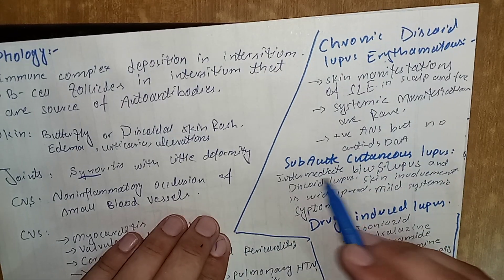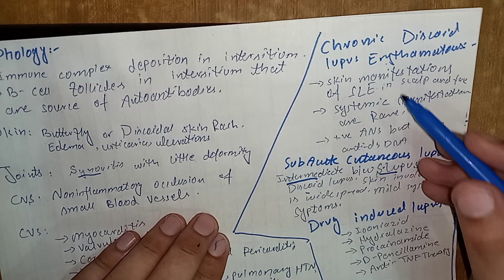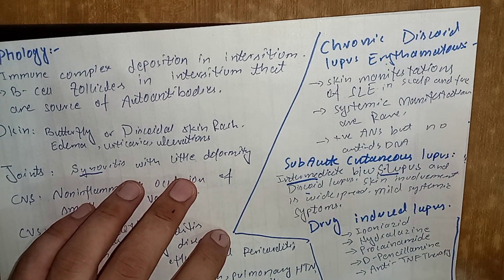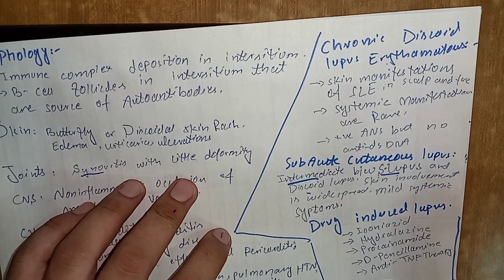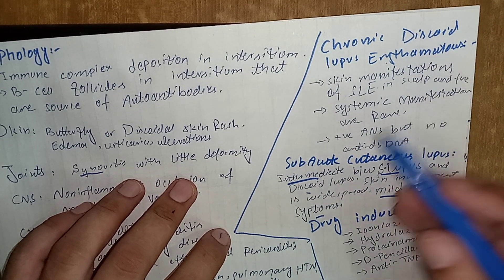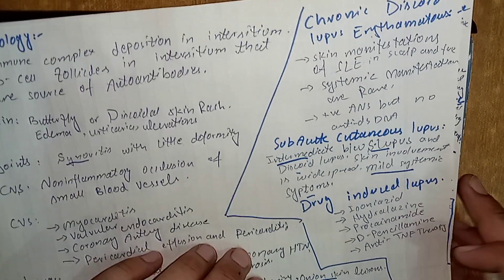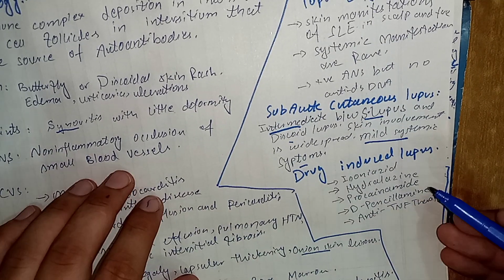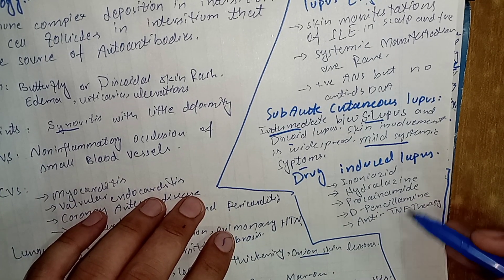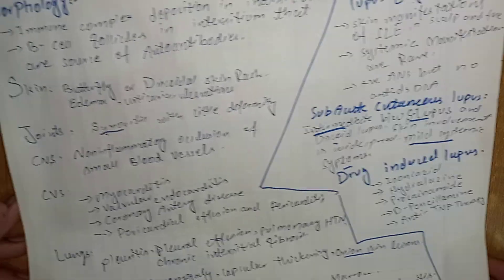Subacute cutaneous lupus is intermediate between SLE and discoid lupus. Skin manifestations are similar to chronic discoid lupus but more extensive, involving more body parts, and there are also mild systemic symptoms. Drug-induced lupus can be caused by isoniazid, hydralazine, procainamide, penicillamine, or anti-TNF therapy. These drug-induced lupus symptoms disappear when the drug is discontinued. That was all about SLE.